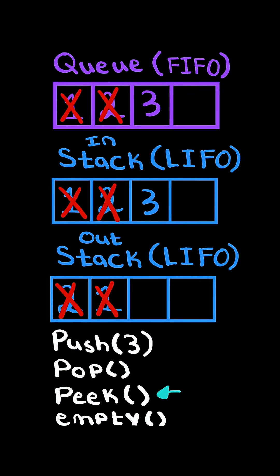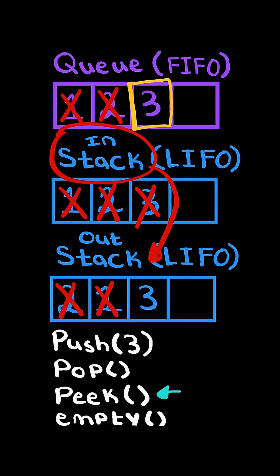Now let's do another peek operation. This returns the first element in the queue. Since the out-stack is empty, we pop all elements from the in-stack and append them to the out-stack — so we pop three, append it to the out-stack, and return the top of the out-stack.